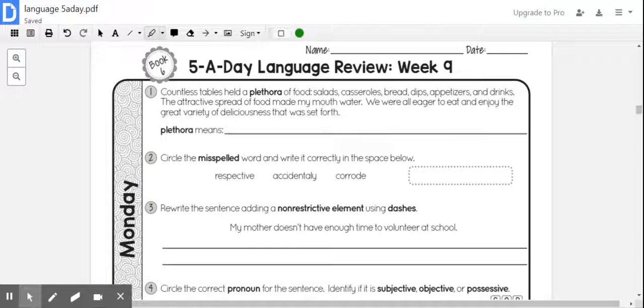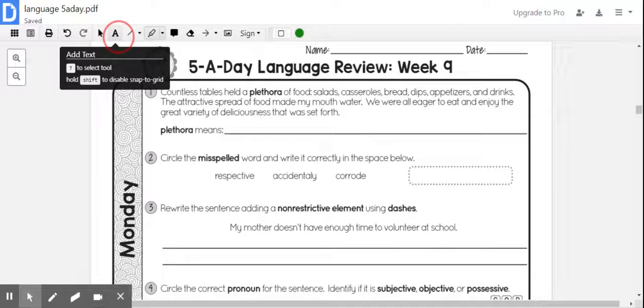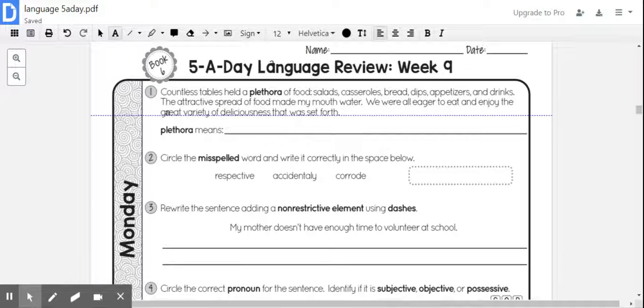So just based on how it's being used, it's talking about a plethora of food, and then there's a long list of different food items that are available for selection. Also, right here it says 'great variety of deliciousness.' Plethora is going to mean a wide variety of things—abundance or excess, or a lot of something.